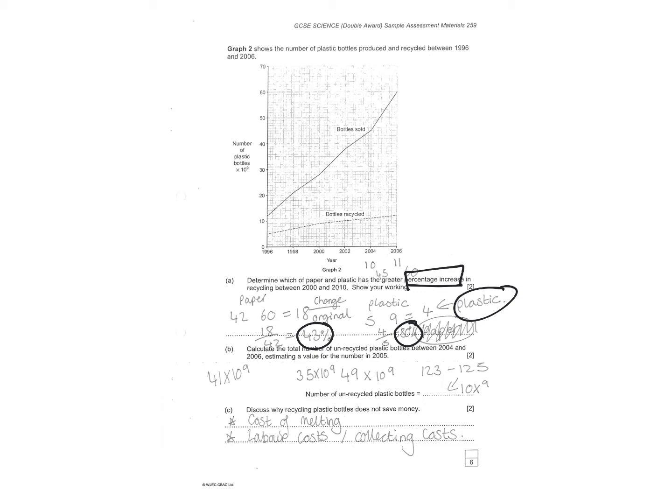Calculate the total number of unrecycled plastic bottles between 2004 and 2006. Estimating a value for 2005. You were given these values in terms of 2004 and 2006. And you had to estimate a value for 2005 using the graph. Add them all together. And there was a bit of a range based on what value you used for 2005. What did you estimate from the graph? So 123. Be careful that you've got the times 10 to the nine.